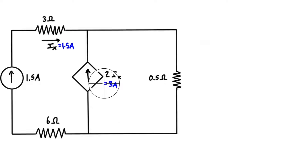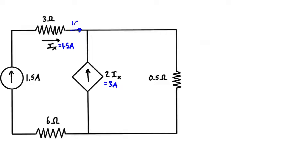We have 1.5 amps coming into this junction. We also have 3 amps coming up into the junction from the dependent source. So if we have 1.5 amps coming in and 3 amps coming in, we have to have 4.5 amps flowing out for Kirchhoff's current law to be satisfied.